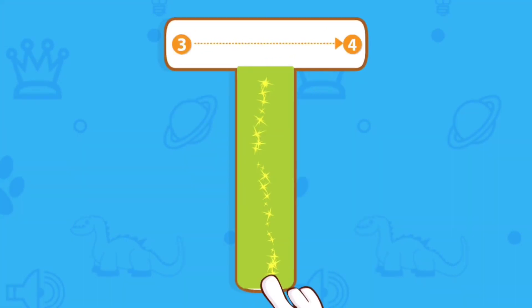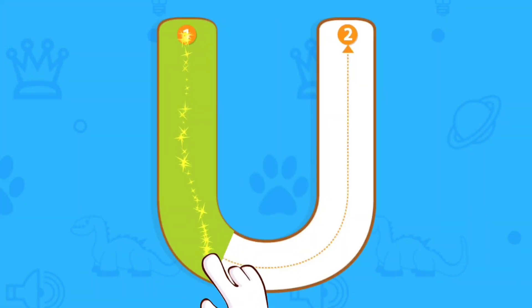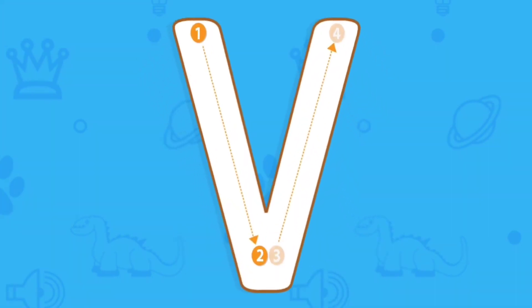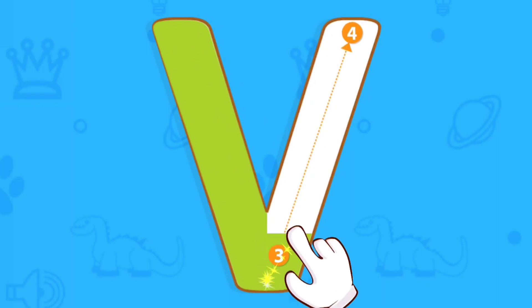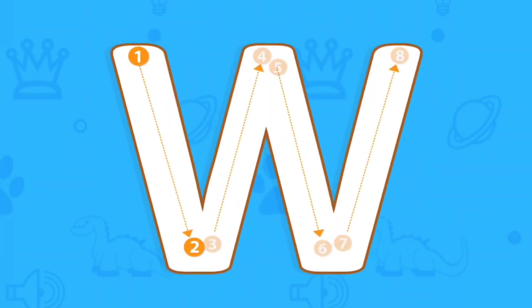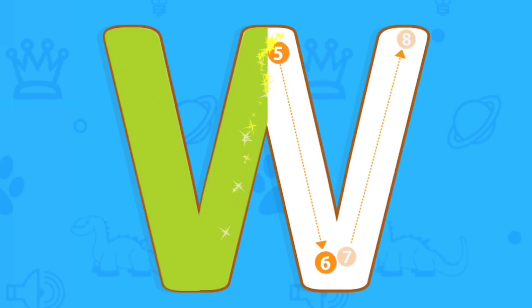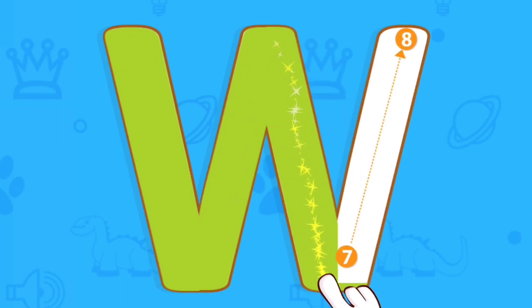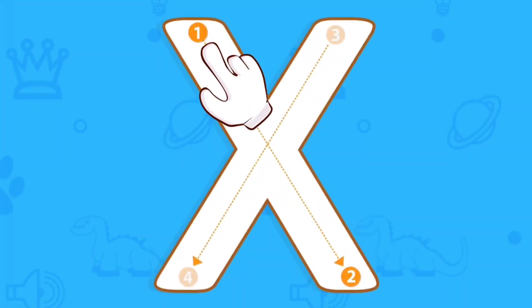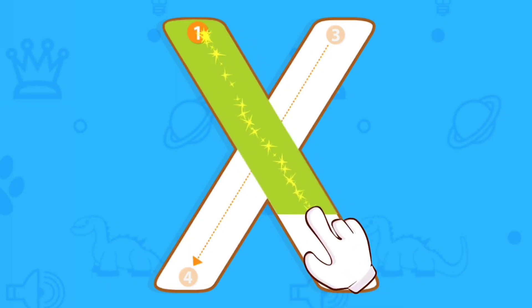T for Tiger. U for Umbrella. V for Van. W for Watch. X for X-ray.